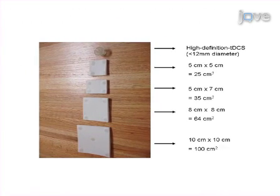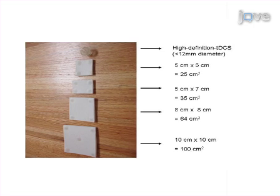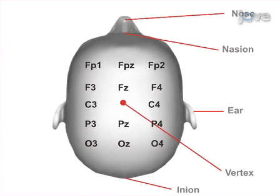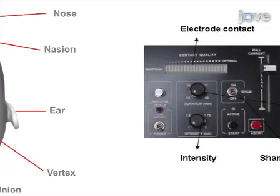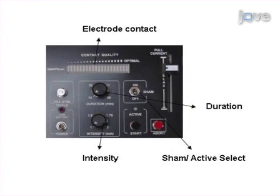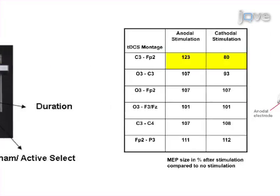The second step of the procedure is to prepare the electrodes using the size and type appropriate for your experiment. The third step is to place the electrodes properly on the chosen site of stimulation. The final step is to determine electrode contact, the polarity of stimulation, and to set the stimulation device settings, such as intensity and duration.